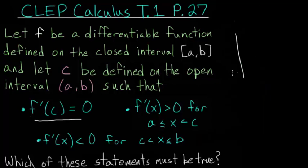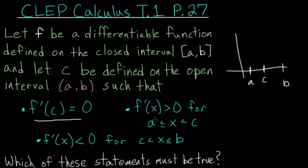Combining all of this: from a to b, with c in between, we know the function reaches either a maximum or minimum at point c since the derivative is 0 there. The slope is positive between a and c, so the function rises going into c, and then the slope is negative between c and b, so the function falls after c.